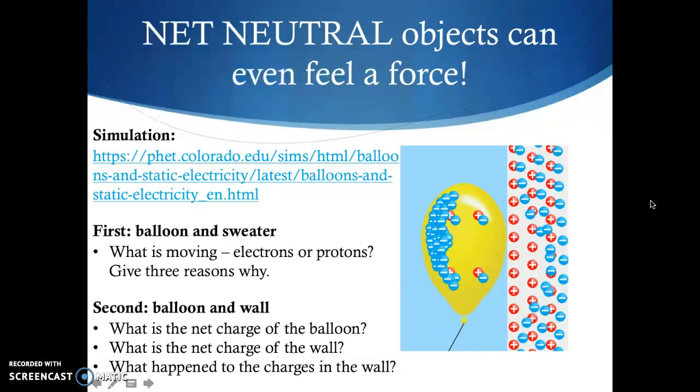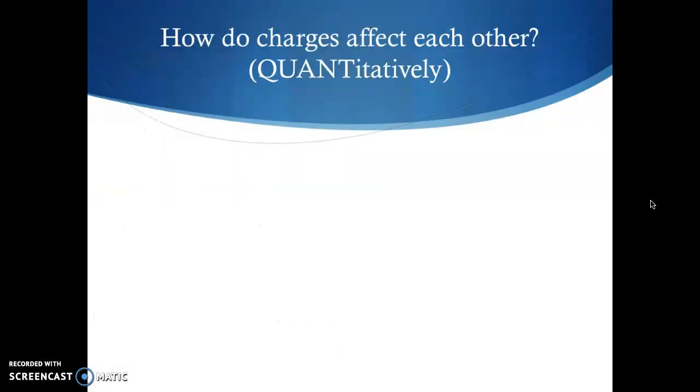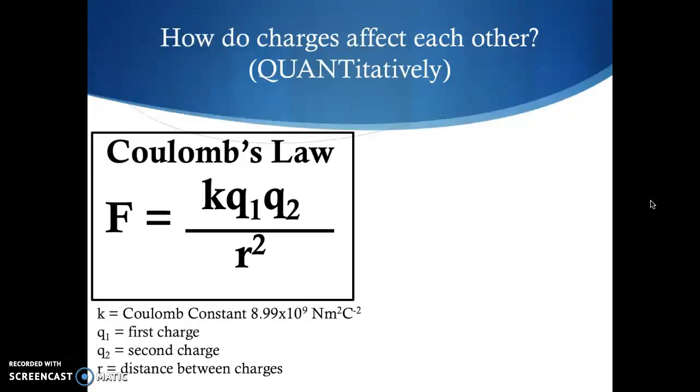So at this point, we have now talked about how charges can affect each other qualitatively, and now we're going to move on to the quantitative, trying to stick a number to how much force these charges would feel when brought near each other. For this, we're going to use Coulomb's law. Coulomb's law says that the force, the electric force, F, is equal to KQ1Q2 over R squared. Here, K stands for Coulomb's constant. It's given in your data booklet, and it is 8.99 times 10 to the 9th Newton meters squared per Coulomb squared. Again, you do not need to memorize this number, it is in your data booklet on the constants page. Then you have Q and Q, this is going to be your first charge and your second charge, divided by R squared. R here stands for the distance between the charges.